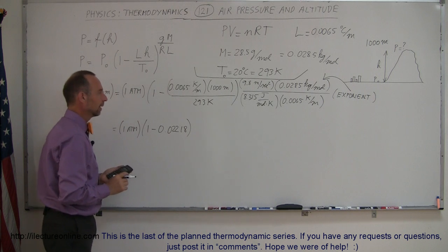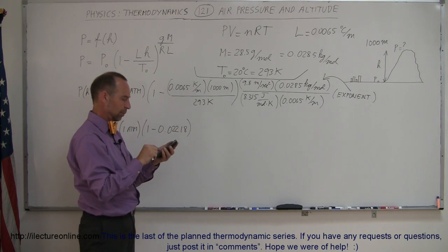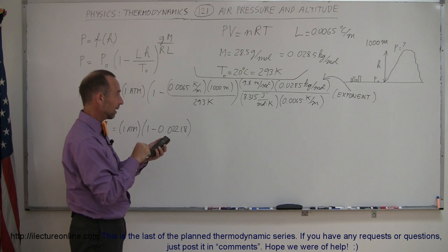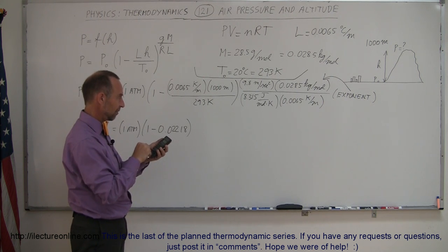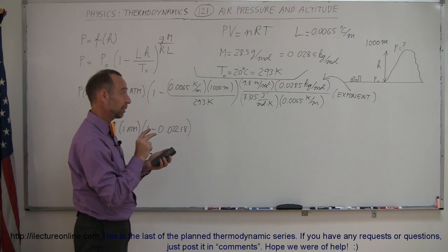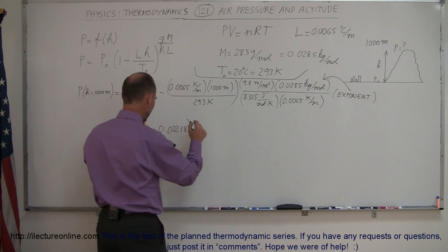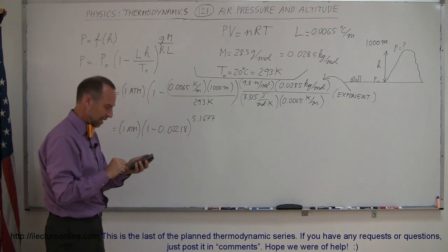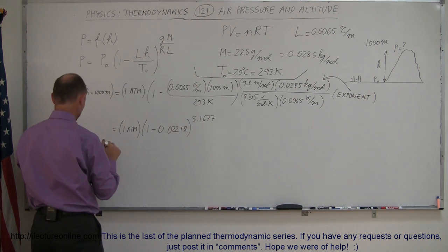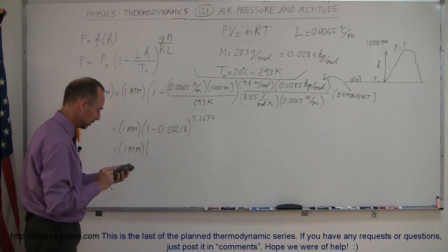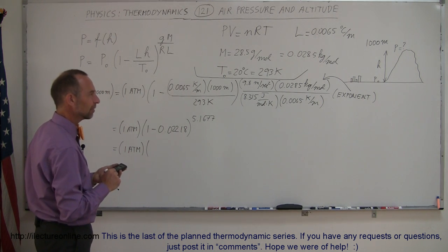Raised to the exponent, so that would be x to the y, like this. So we have 9.8 times 0.0285, divided by 8.315, divided by 8.315, and divided by 0.0065. I believe that's correct. So raised to the 5.1677 as an exponent, and equals. And so we have, this is equal to 1 atmosphere times, I'm going to have to do that again because something isn't working out quite right.